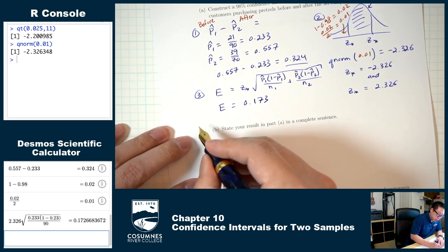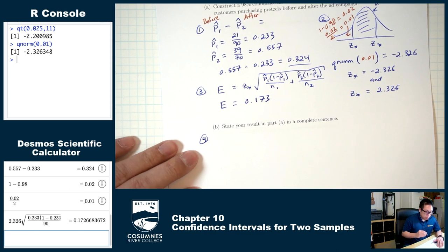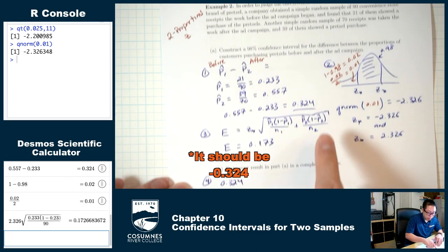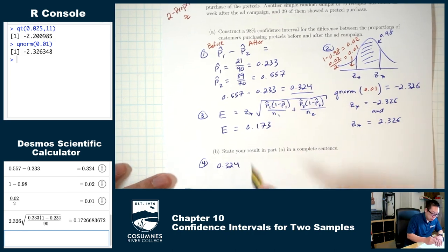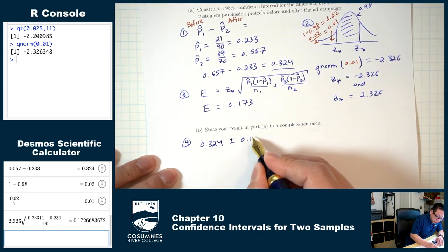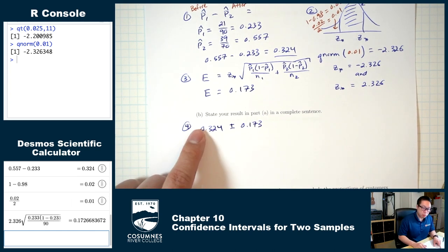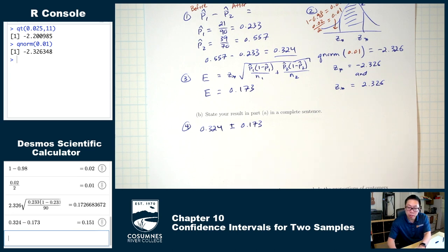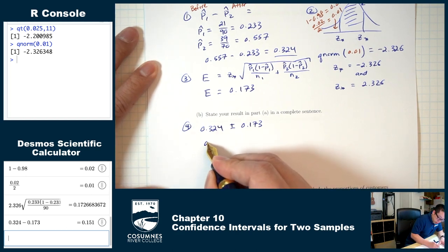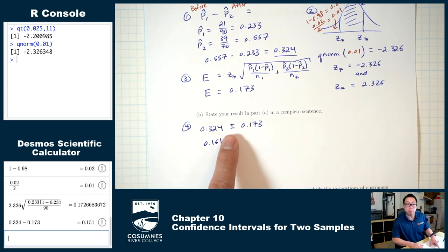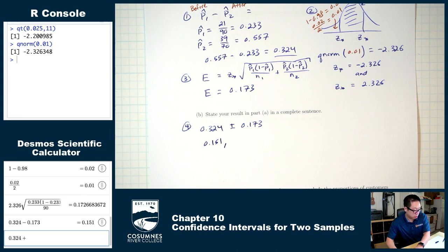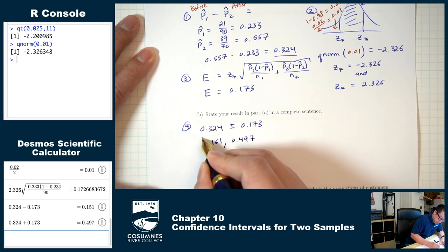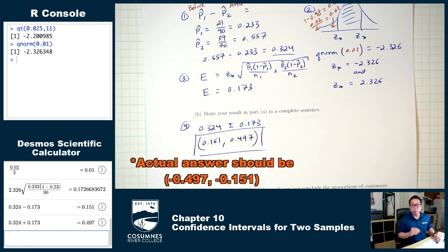Step four: construct the confidence interval. Start with p-1-hat minus p-2-hat, which was 0.324, plus or minus the margin of error 0.173. The low number is 0.324 minus 0.173, which is 0.151. The high number is 0.324 plus 0.173, which is 0.497. That's the confidence interval.